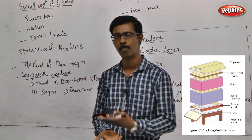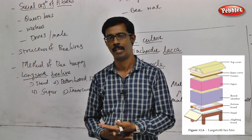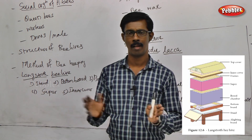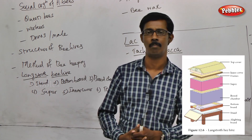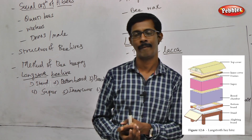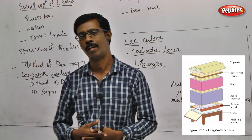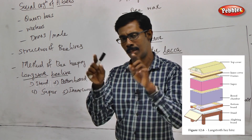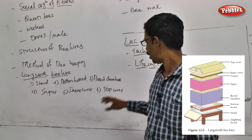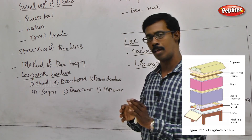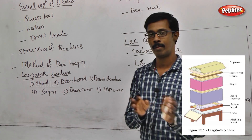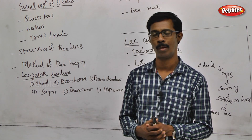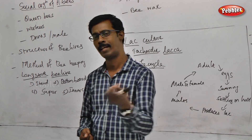The bottom board supports the hive. The brood chamber is very important — this is where queen bees are kept. There are many layers in the brood chamber including wax cells. The super area is where nectar and honey are stored, and this is where we collect honey.